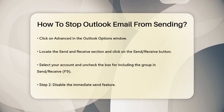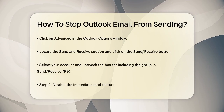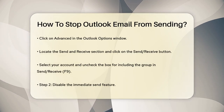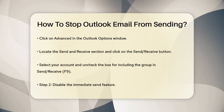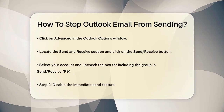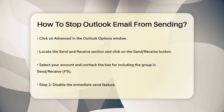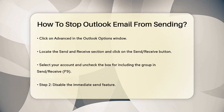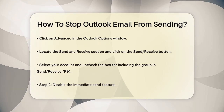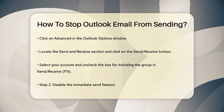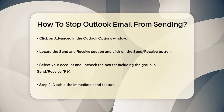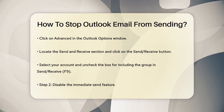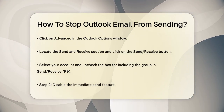This will open the Send Receive Groups window. Here, select your account from the list and uncheck the box that says "Include this group in Send Receive F9." This will prevent Outlook from automatically sending and receiving emails when you're online or offline.